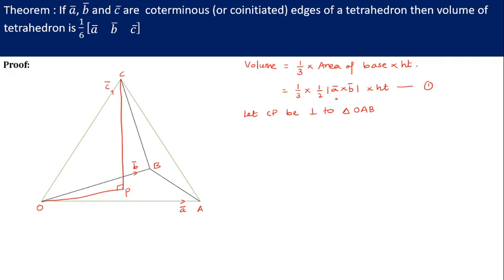Now if you remember in cross product we have already discussed that A cross B is a vector perpendicular to A bar and B bar. Now if you observe A cross B is perpendicular to A bar and B bar. CP is also perpendicular to the base triangle. That means A bar cross B bar be parallel to CP.